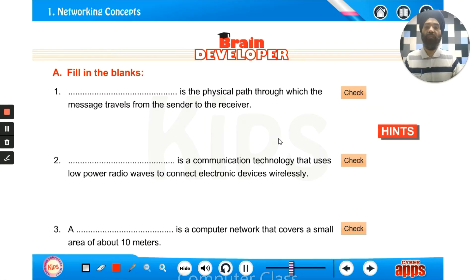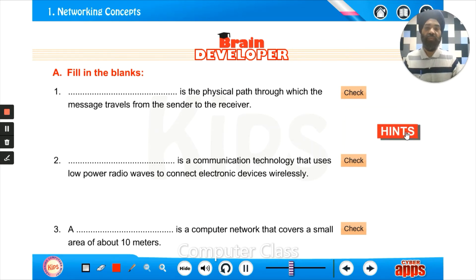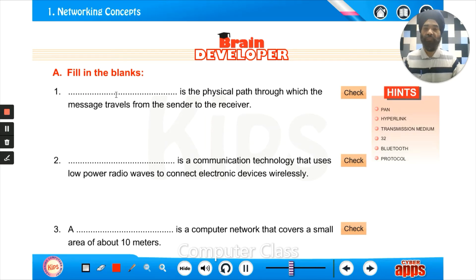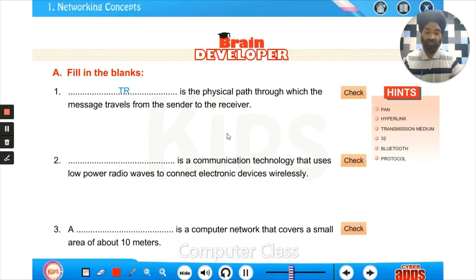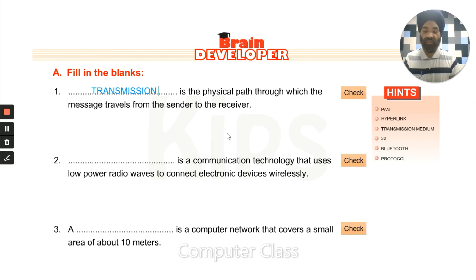Let's try some exercises. Here we have fill-in-the-blanks with hints provided. The first one: blank is the physical path through which the message travels from sender to the receiver. The answer is transmission medium.